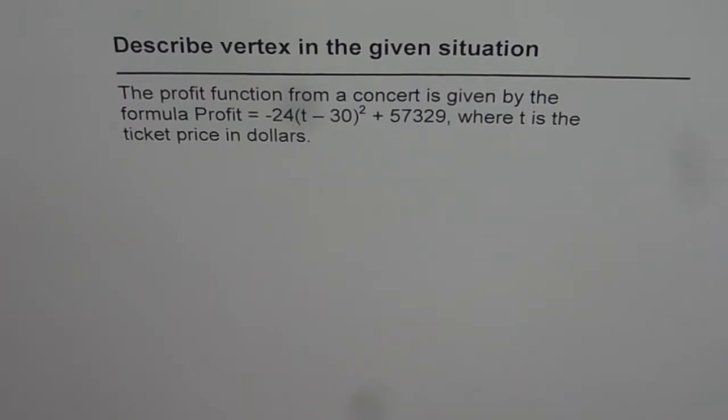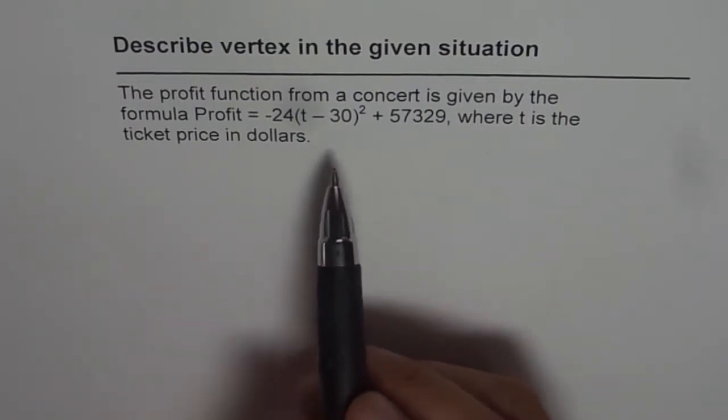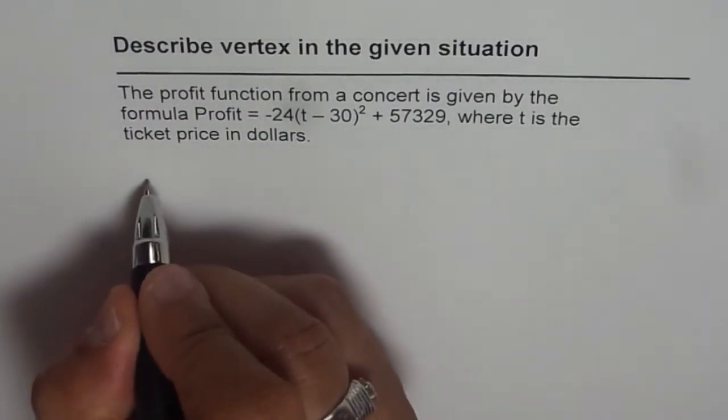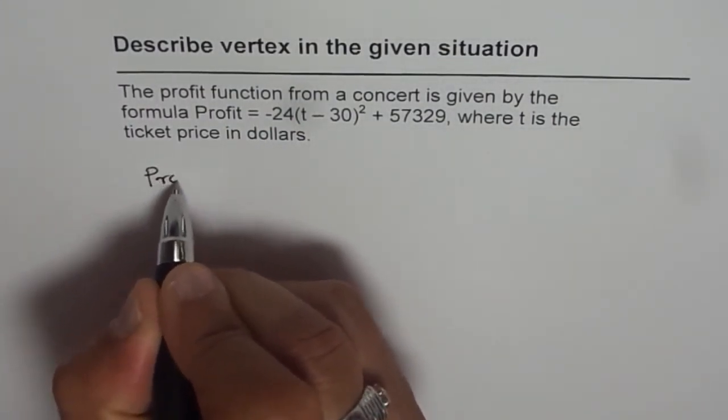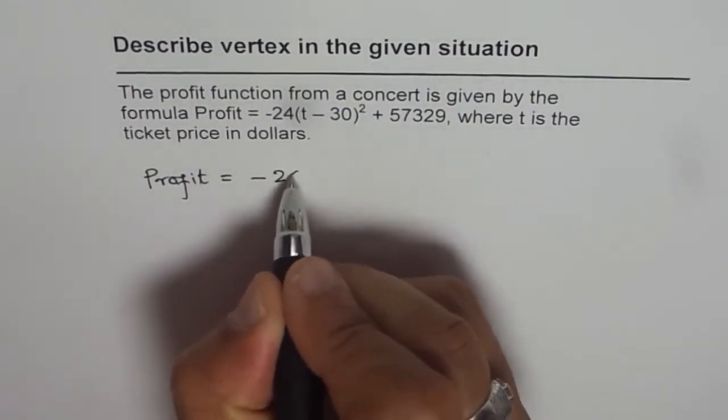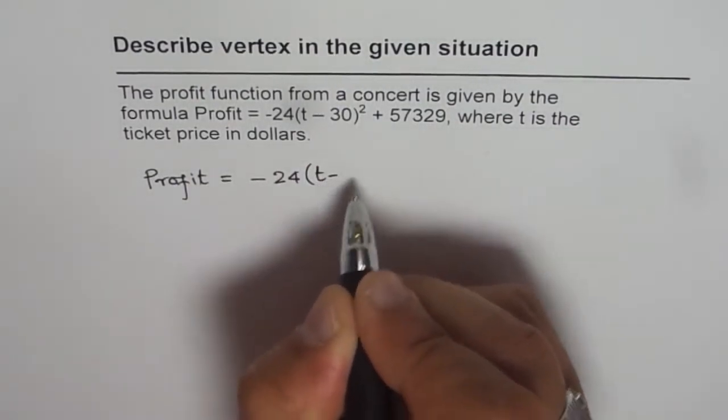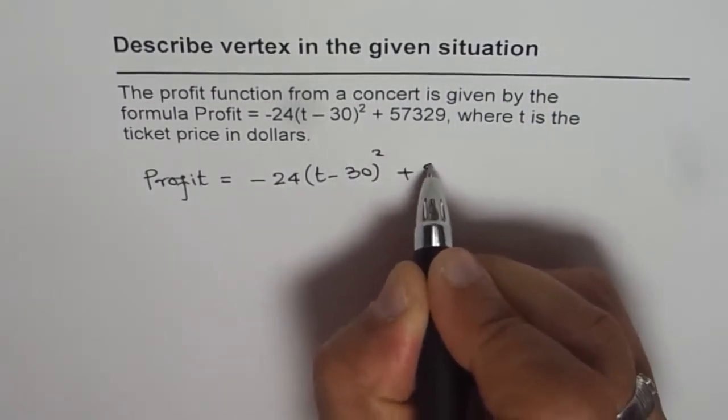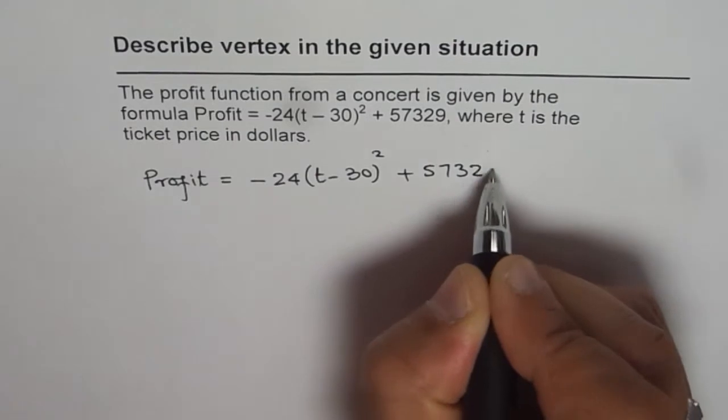Now we need to explain the significance of the vertex from this formula. So let's rewrite the formula itself. It says profit equals minus 24 times (t minus 30) squared plus 57329.